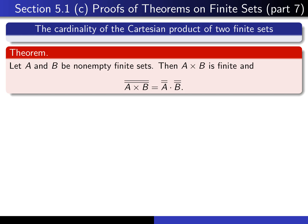Here's the theorem that we're going to prove. We're going to prove that if A and B are two non-empty finite sets, then the Cartesian product is finite, and the cardinality of the Cartesian product is the product of the two cardinalities.